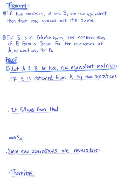Here is the first theorem of section 4.6. This theorem tells us that if two matrices A and B are row equivalent, then their row spaces are the same — the row space of matrix B equals the row space of matrix A. The theorem also tells us that if matrix B is in echelon form, then the nonzero rows of B form a basis for the row space of matrix A as well as the row space of matrix B.